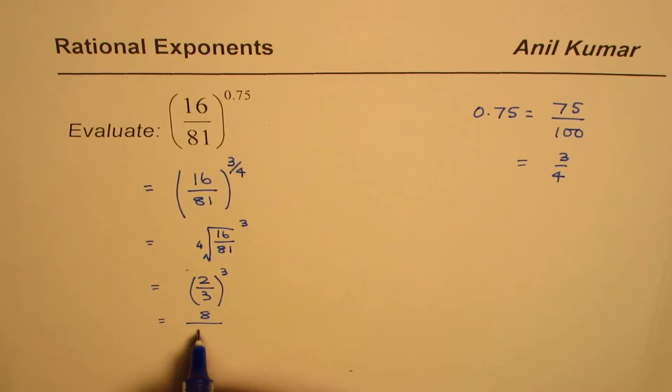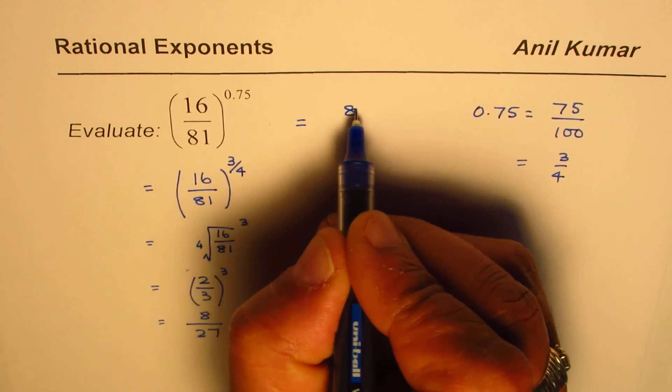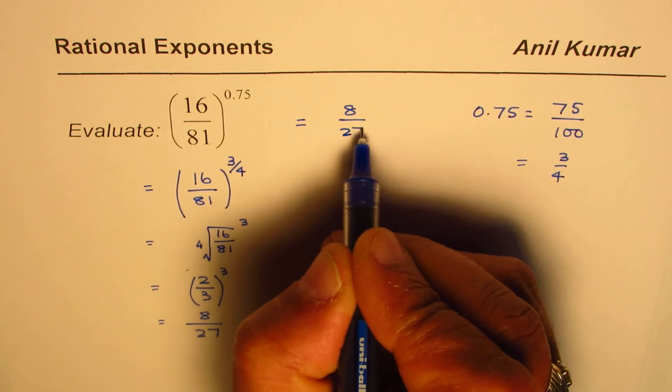3 times 3 times 3 is 27. So the answer is 8 over 27.